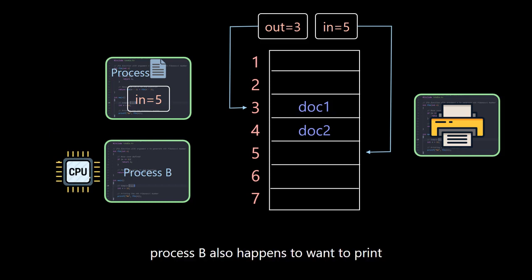At this time, process B also happens to want to print, so just like process A, it reads position 5 from the shared variable in. Next, document B is actually placed in position 5.